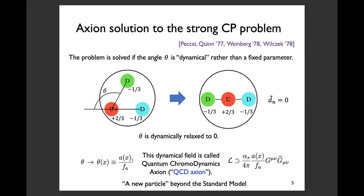Technically, the promotion of theta to a dynamical field can be done by assuming a coupling between a scalar field and the gluon field of QCD. The quantum excitation of this scalar field gives a new light particle not present in the standard model, motivated by the solution of the strong CP problem. This QCD axion solution to the strong CP problem has turned out to be the most compelling solution, but this light particle has not been discovered yet.